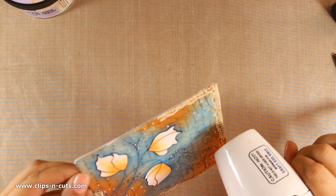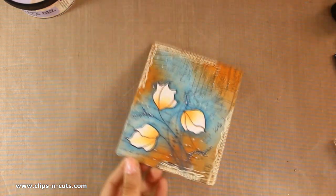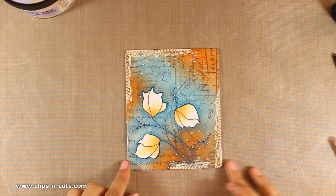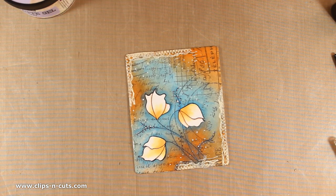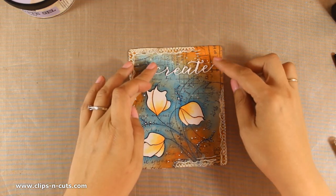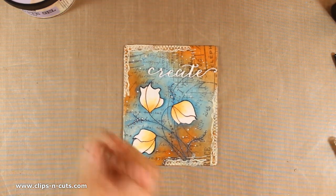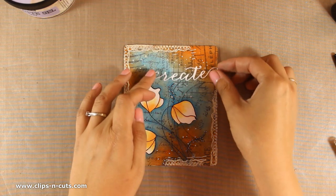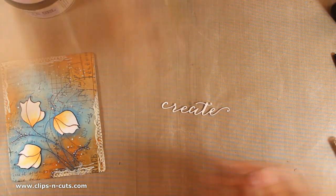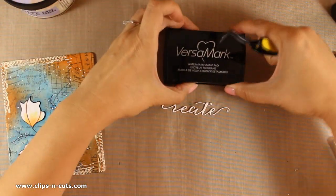For my word today, I am going to use Create, and this is a die by Penny Black. I have actually used my Sizzix machine to die cut my word out of a white cardstock, but as I am placing it there I don't really like the color, so I am going to emboss it using the same embossing powder that I've used for my corners.